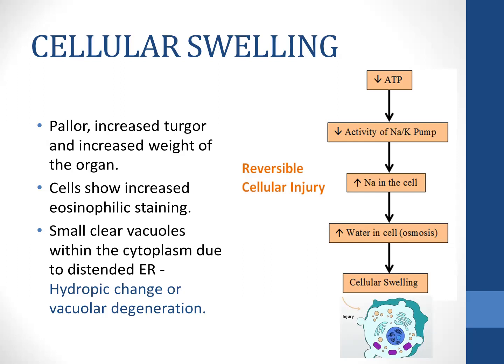When there is cellular swelling, the organ appears pale, turgidity is increased, and the weight of the organ is also increased. On microscopy, the cells show increased eosinophilic staining. Sometimes small clear vacuoles within the cytoplasm may be seen because of distension of the endoplasmic reticulum. This is also called hydropic change or vacuolar degeneration.